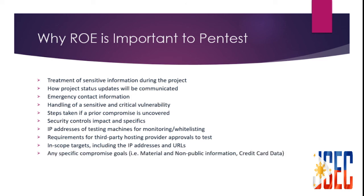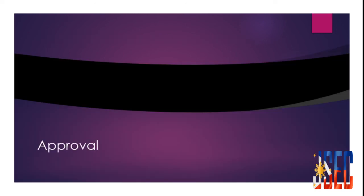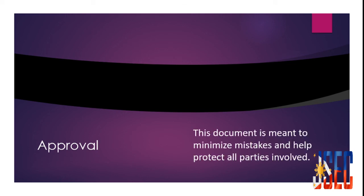The ROE also covers requirements for third-party hosting provider approval to test, in-scope targets including IP addresses and URLs, any specific compromise goals — for example, material and non-public information or credit card data — and specific web forms to be avoided. Finally, approvals are the last step: a thorough review and update of any requested information, and written approval that the information in the ROE is correct. Once this is received, the testing team can begin the assessment based on the content of the document.